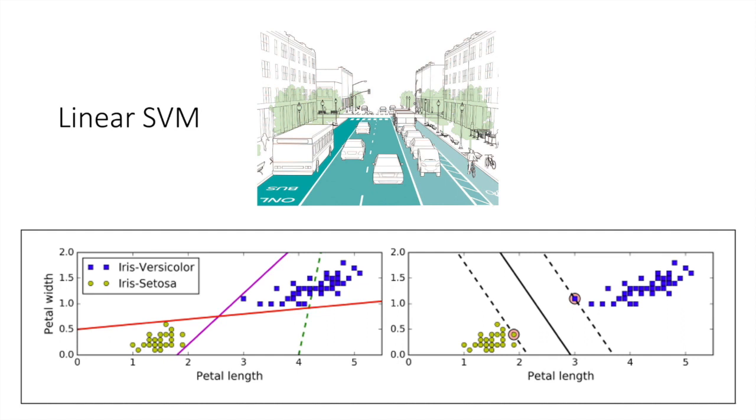In contrast, the solid line in the plot on the right represents the decision boundary of an SVM classifier. This line not only separates two classes but also stays as far away from the closest training instance as possible. You can think of an SVM classifier as fitting the widest street, represented by parallel dashed lines between the classes. This is called large margin classification.